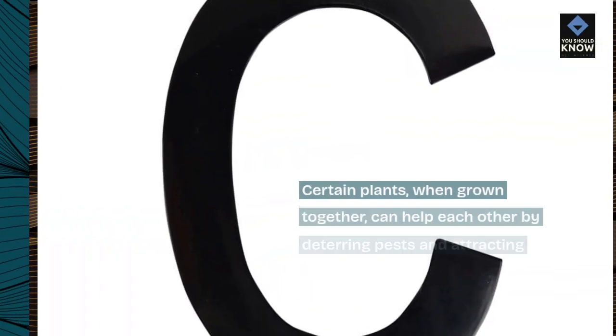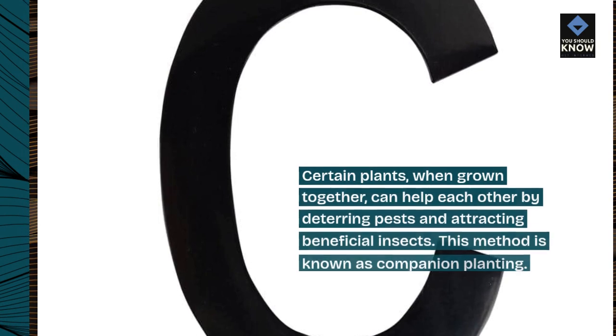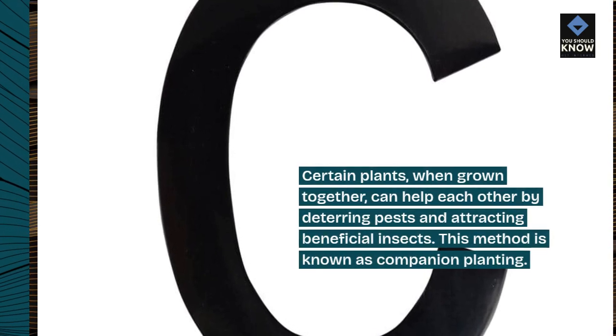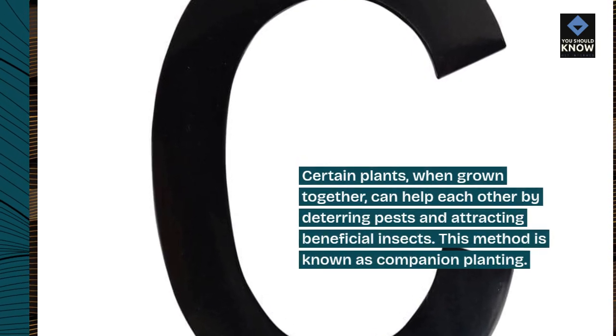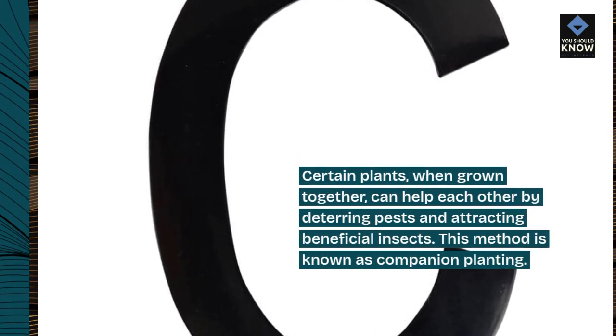Tip 10: Use companion planting. Certain plants, when grown together, can help each other by deterring pests and attracting beneficial insects. This method is known as companion planting.